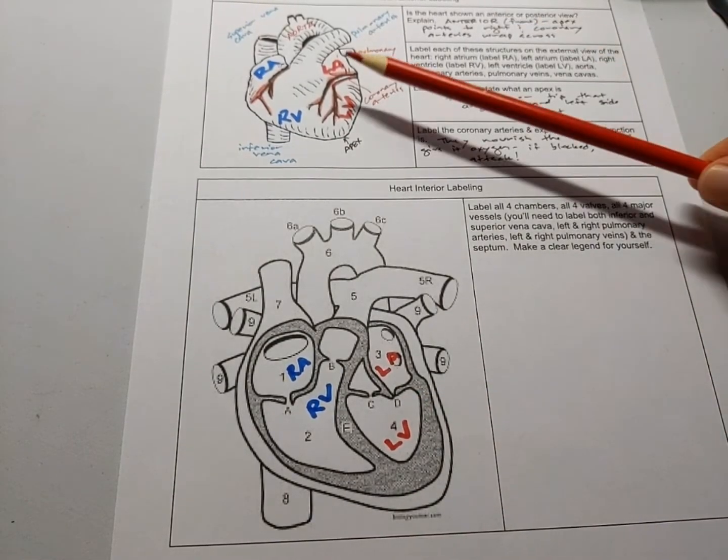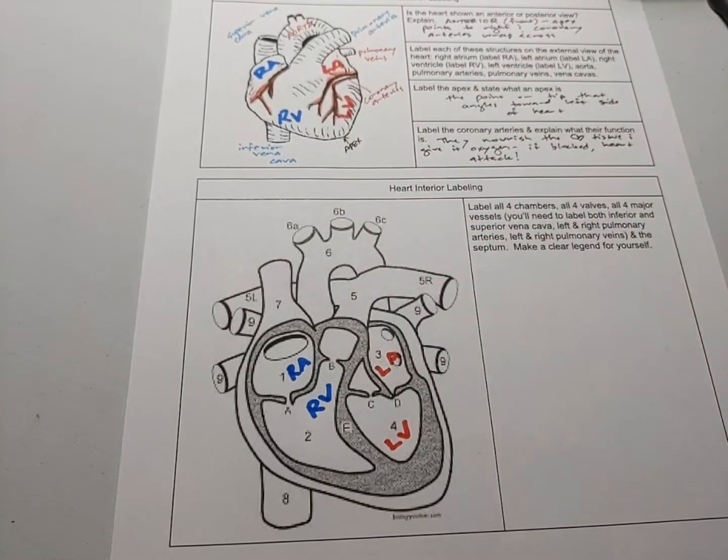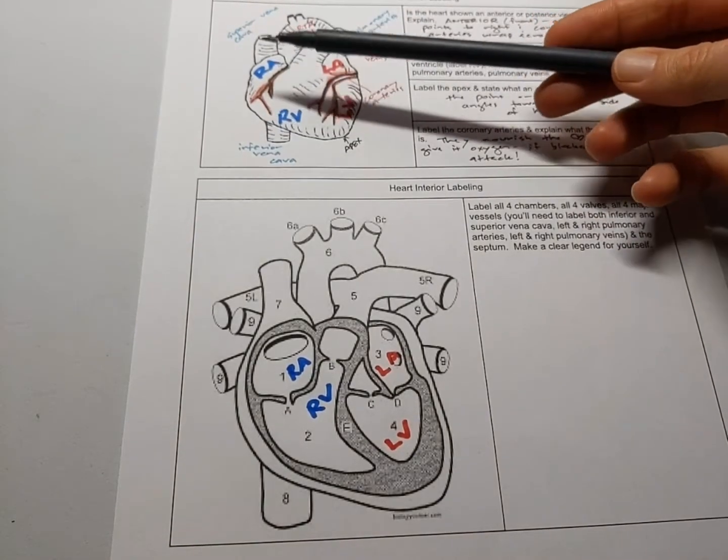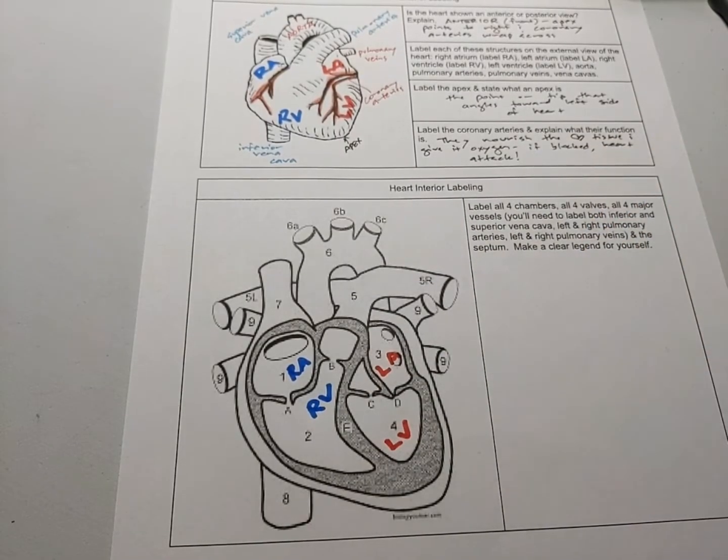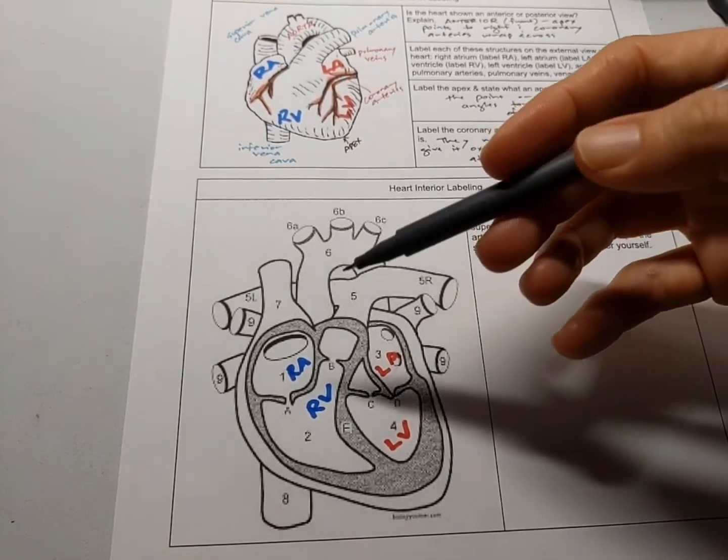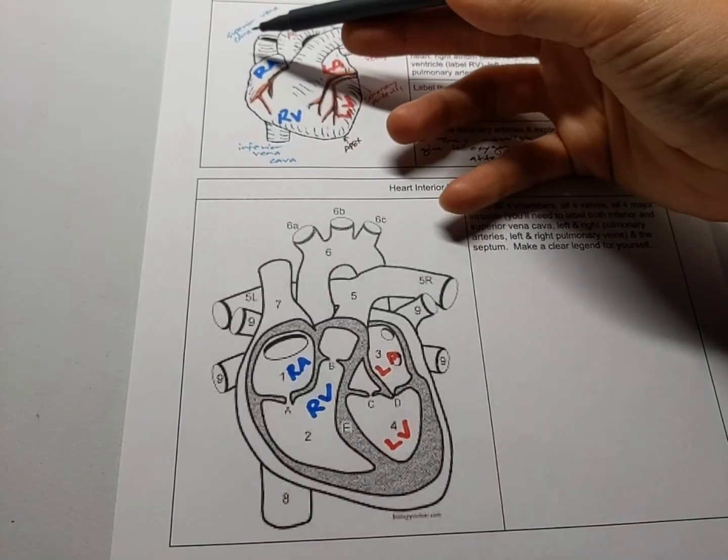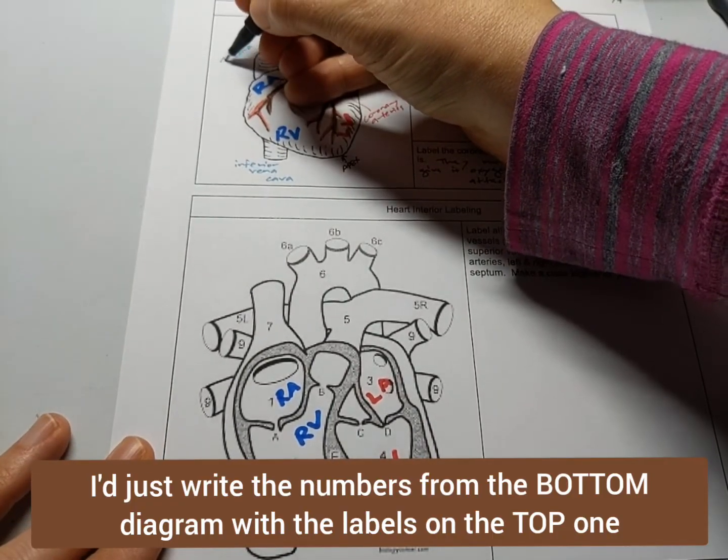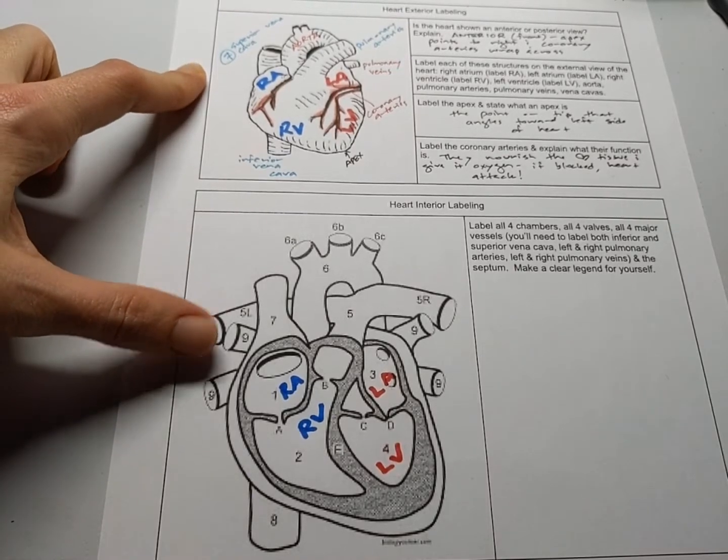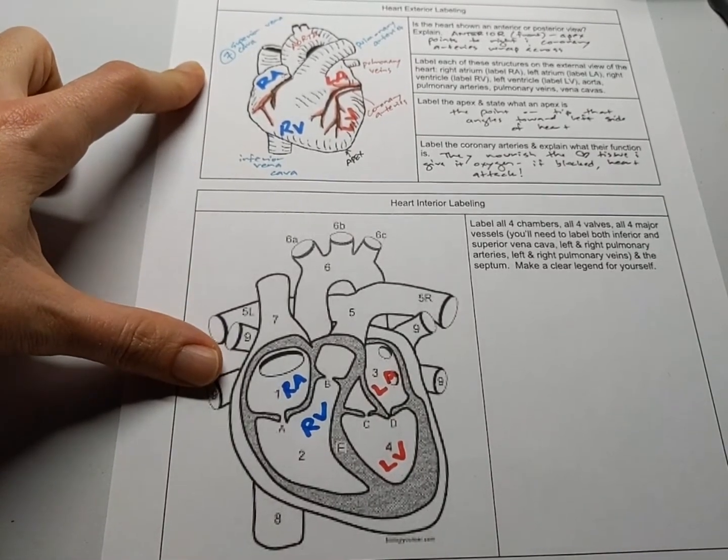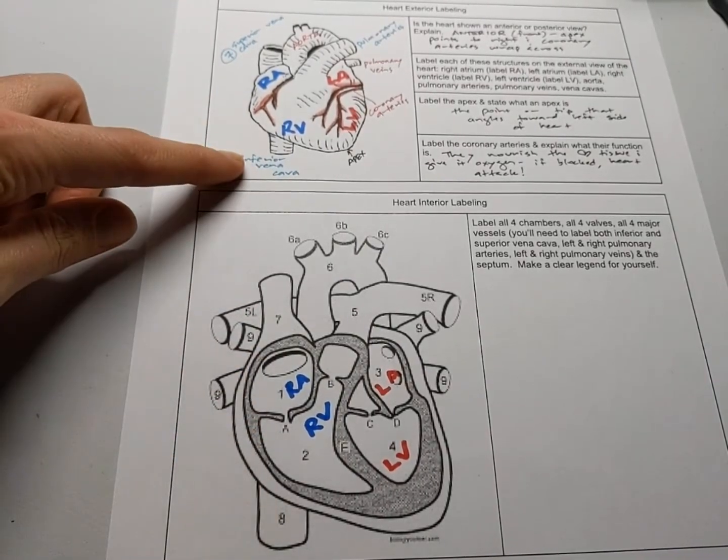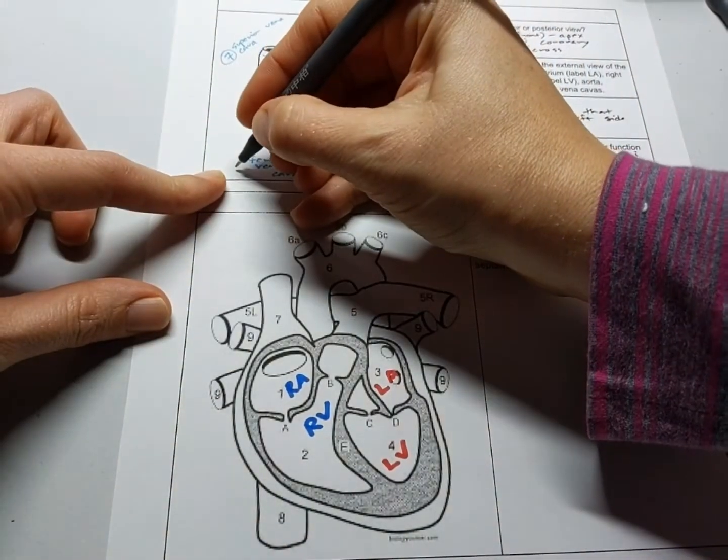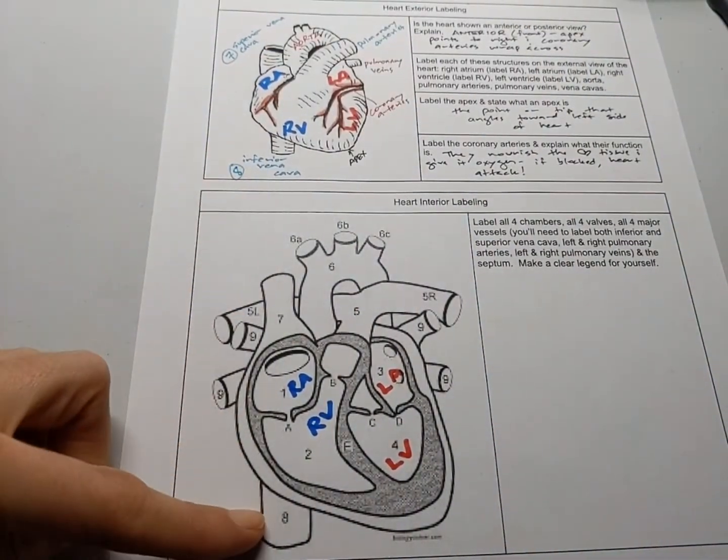The four major vessels we already labeled up in the exterior version, and we'll label those again as well. So start by thinking about where are the vena cavas. You see the vena cavas up here. Think about where the vena cavas are in this diagram down here in terms of what number represents each vena cava. So number seven corresponds to the superior vena cava. I'm not going to rewrite it. I'm just going to put a number seven up in this diagram because I don't want this one to be too complex and messy. Then if I look down here, number eight corresponds with the inferior vena cava.